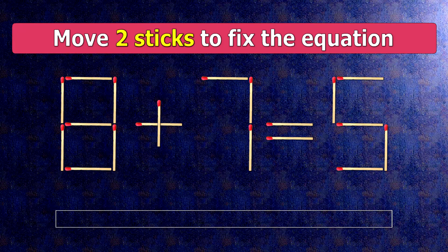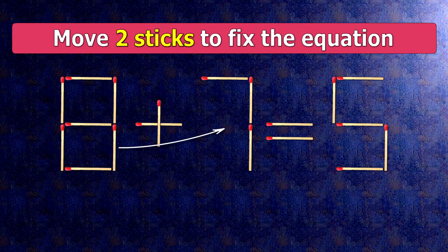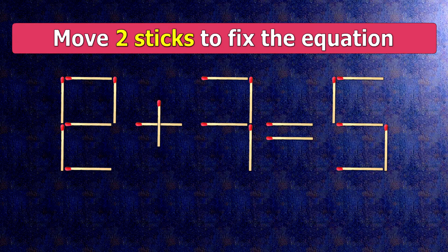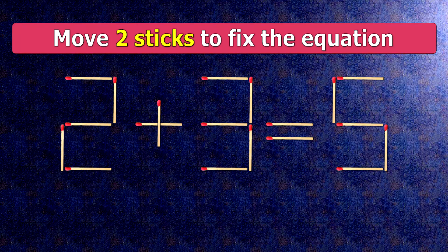Here is how this puzzle is solved. To do this, all we need to do is move this match right here, and this match right here. Now when we check the condition, 2 plus 3 is 5.